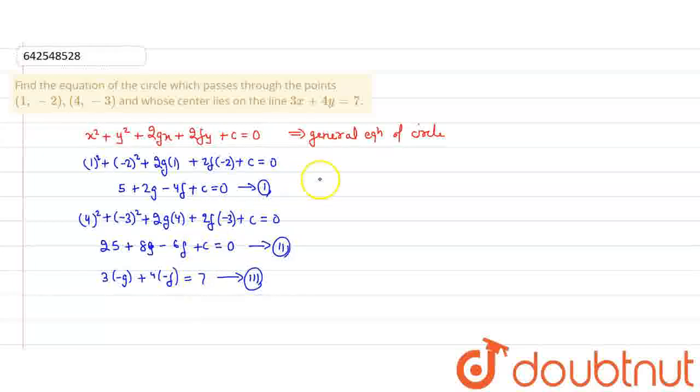We can solve this and find that g = -47/15, f = 3/5, and c = 11/3.